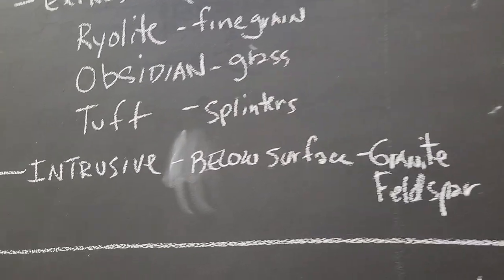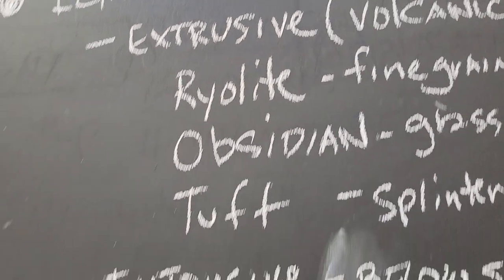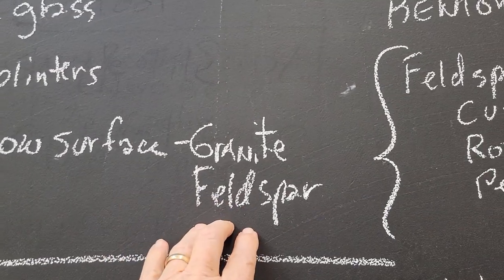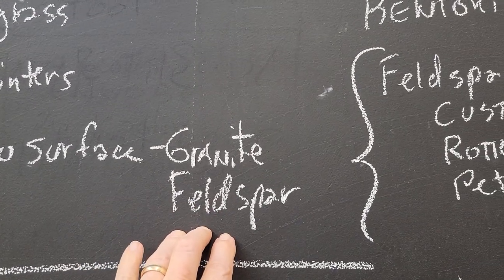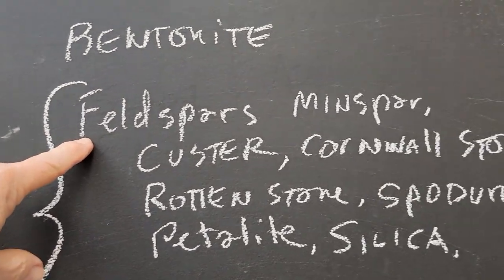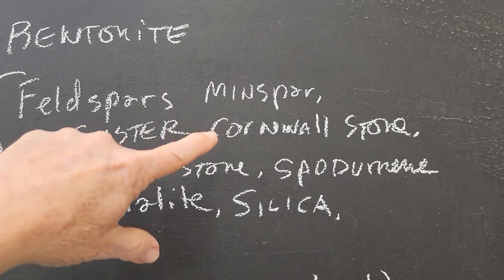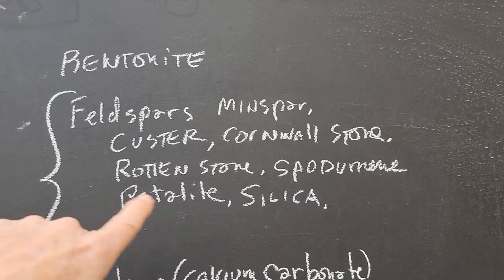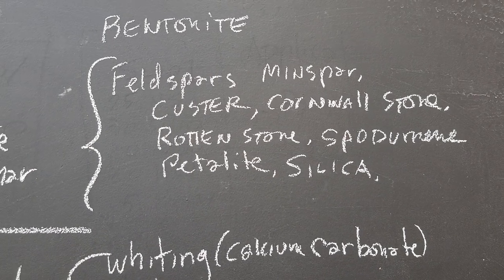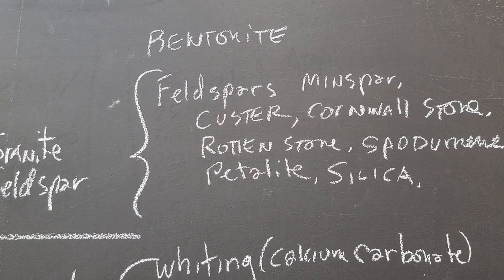If it's an igneous rock that stays in the ground below the surface, it can form granites and feldspars. What we're going to use from those would be like Minspar, Custer, Cornwall, Rottenstone, Spodumene, etc. There's a whole bunch more, but I just want you to get a basic idea.